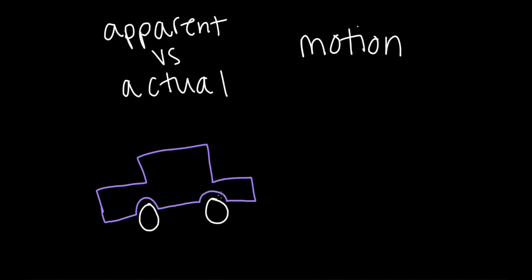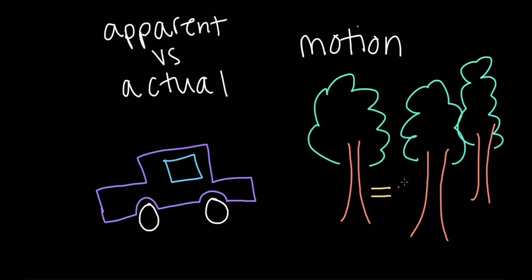Let's pause and talk a little bit about motion, specifically apparent versus actual. Imagine you're sitting in a car and driving through a forest. To your perspective, as you look out the window, the trees seem to be whizzing by. But trees, of course, are rooted to the ground. It's actually you that are moving relative to the surface of the Earth. This is the difference between apparent and actual motion.